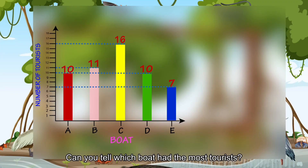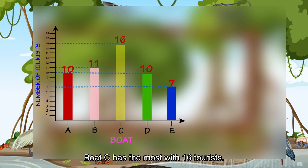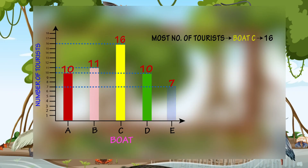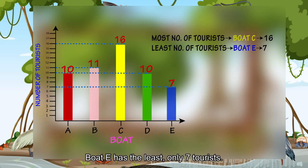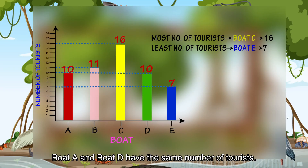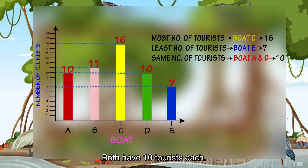Can you tell which boat had the most tourists? Boat C has the most with 16 tourists. Which boat had the least tourists? Boat E had the least — only seven tourists. Which two boats had the same number of tourists? Boat A and Boat D have the same number of tourists. Both have ten tourists each.